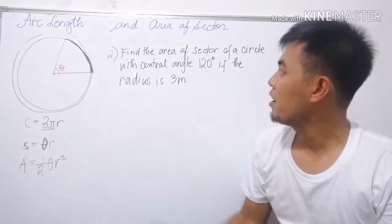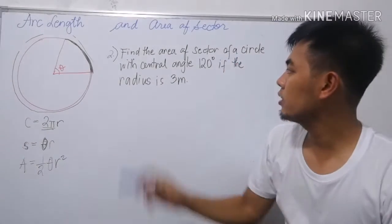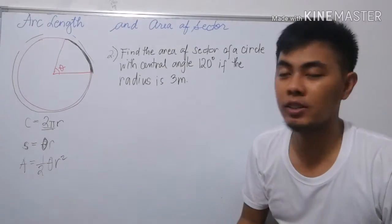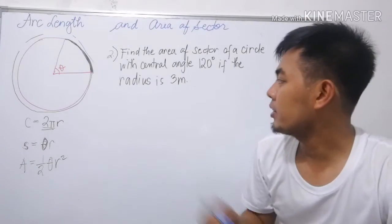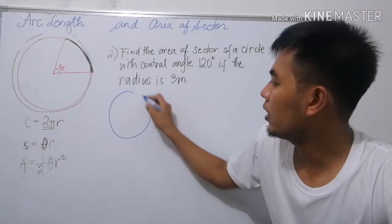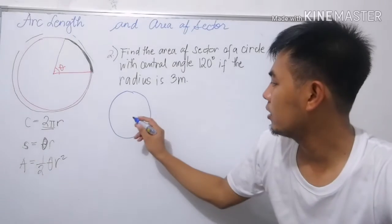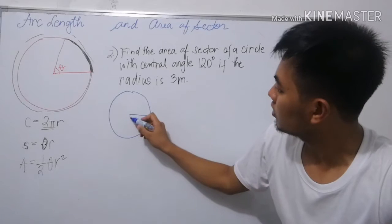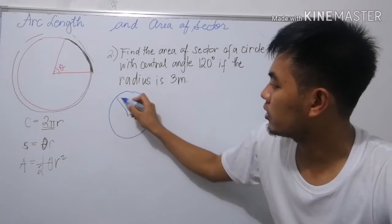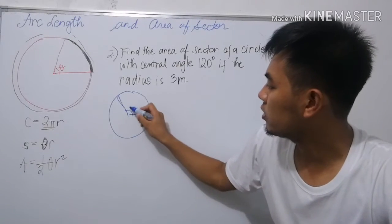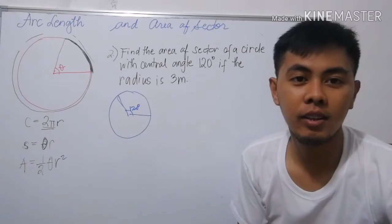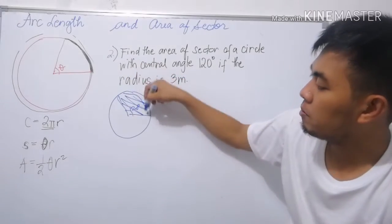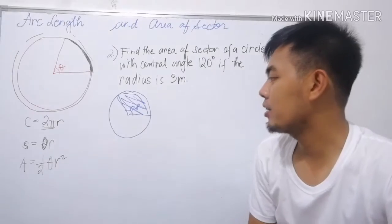Example number 2: Find the area of a sector of a circle with central angle 120 degrees if the radius is 3 meters. In a circle with 120 degrees, this is 60 and another 60, so this is 120 degrees. What is the area of this portion of the circle?